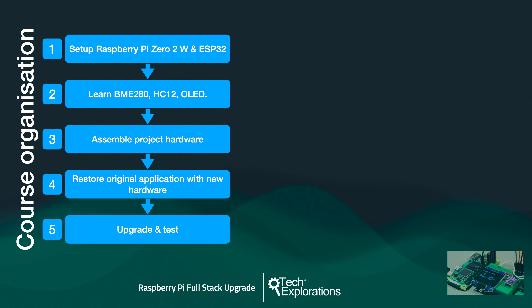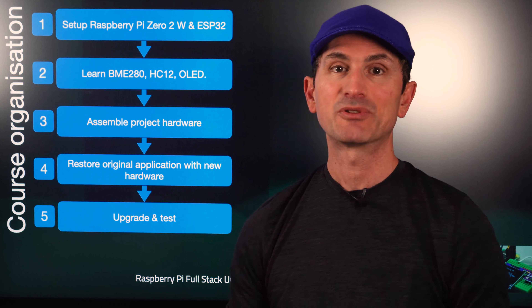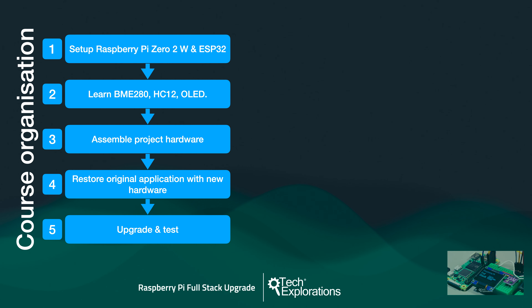In the third step, section six, you'll assemble the hardware for the full-stack application. At the end of this section, you'll have a breadboard prototype based on the Raspberry Pi 02W and another breadboard prototype based on the ESP32. In the fourth step, sections seven and eight, you'll restore the original application on the new hardware. By the end of this section, the restored application will have the same functionality as the original. This is where you'll implement the communication between the nodes using the new RF transceiver and log temperature and humidity from the BME280 sensor.